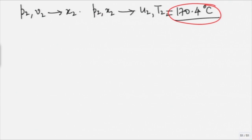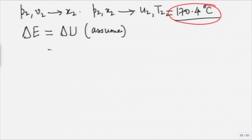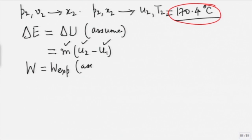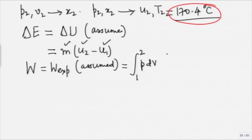Change in energy ΔE is assumed equal to ΔU (no other energy component mentioned). This becomes M(u₂ − u₁). u₁ is read from steam tables, u₂ is calculated. Work done W is assumed to be expansion work (no stirrer or electrical work). Since it is quasi-static, W = ∫P dv. Because PV = constant, P = P₁V₁/V, so the integral yields P₁V₁ ln(V₂/V₁). We know P₁, V₁, and V₂/V₁ = P₁/P₂ = 4.